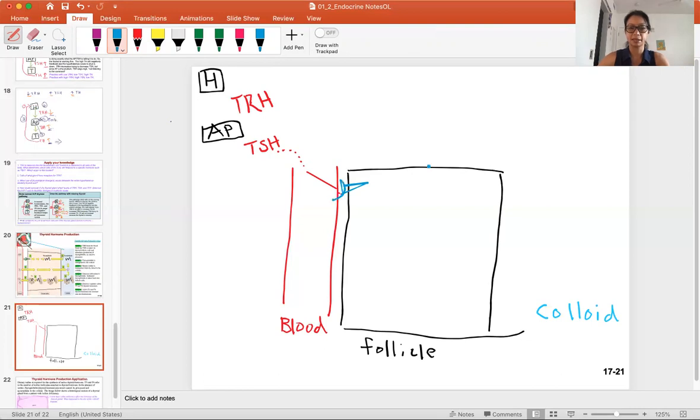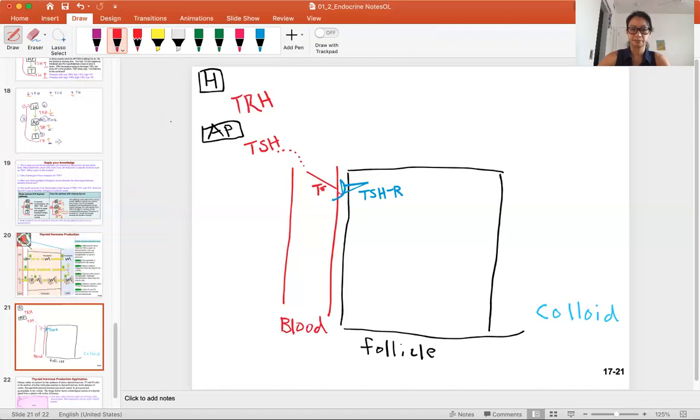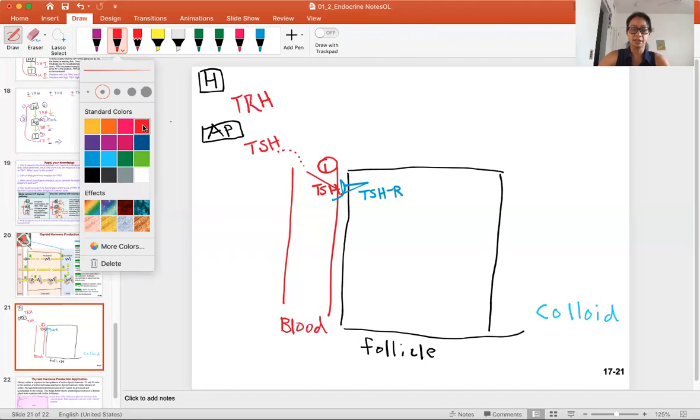This is a TSH receptor. We have TSH binding to this receptor. That's step one. When TSH binds to the thyroid gland, it is stimulating it, telling it to make more thyroid hormone.